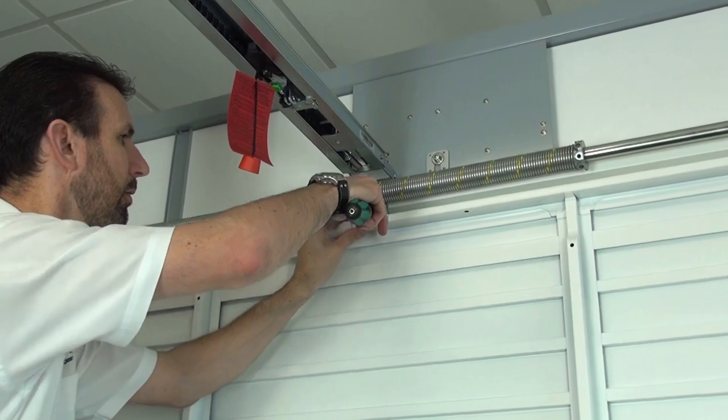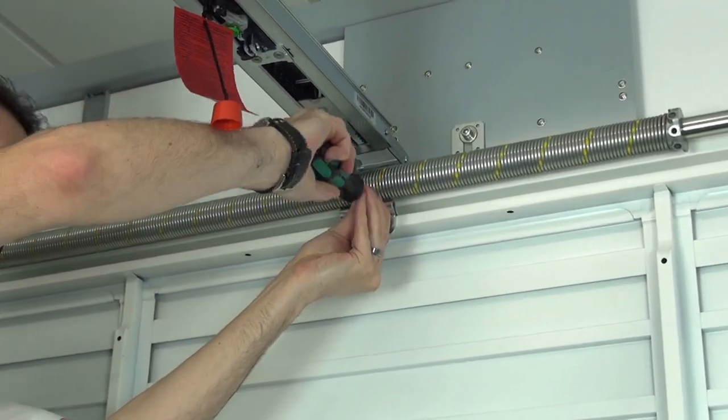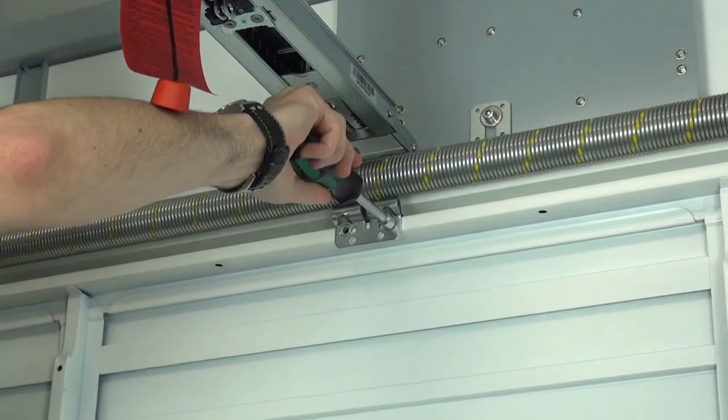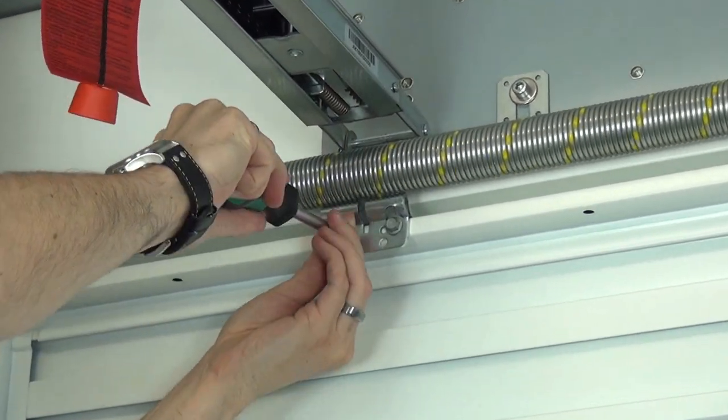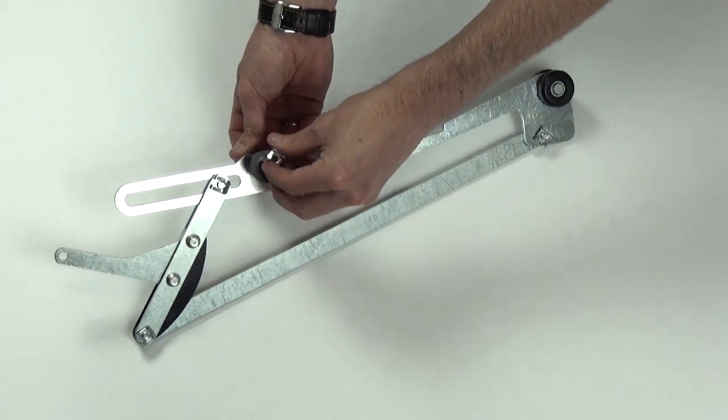Take the activating arm bracket and screw it into the top of the door using four 10mm hex head screws. Assemble the activating arm as shown in the instructions.